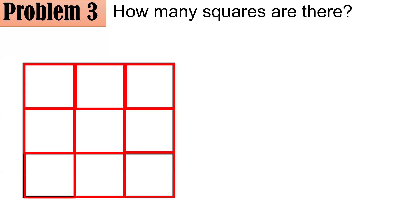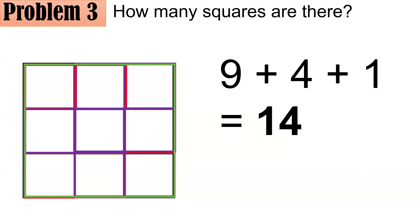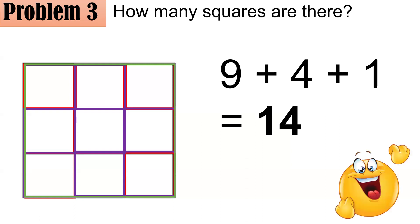Now let's count the two-by-two squares: you have 10, 11, 12, and 13 — so four two-by-two squares. And there is one three-by-three square as a whole. Therefore, that's nine plus four plus one. Nine one-by-one squares, four two-by-two squares, and one three-by-three square — so all in all we have 14 squares of all sizes in the given figure. I hope you got this item right.